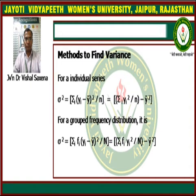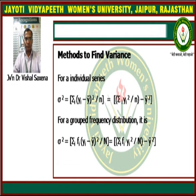Variance is given by the square of the standard deviation. So variance sigma squared equals summation of (yi minus y-bar) squared upon n, which equals summation yi squared upon n minus y-bar squared. For grouped data, we include fi, so the formula becomes: sigma squared equals summation fi (yi minus y-bar) squared upon N, which equals summation fi yi squared upon N minus y-bar squared.